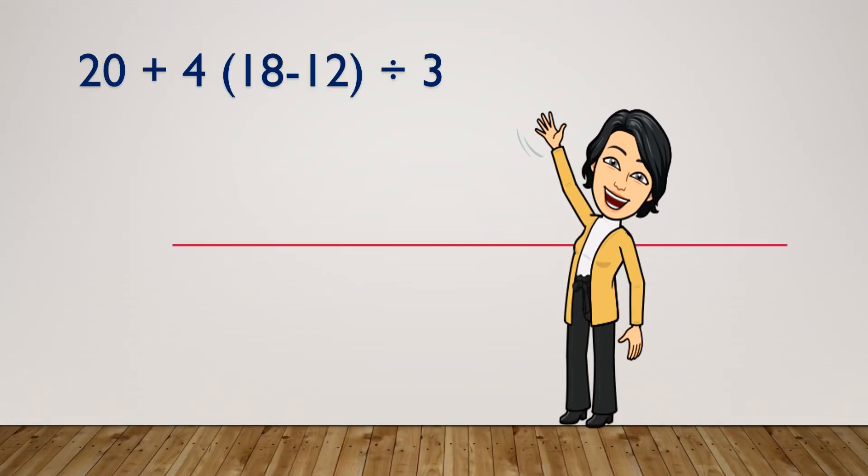Let us evaluate the answer of the two boys. In the equation 20 plus 4, open parenthesis 18 minus 12, close parenthesis, divided by 3. If we follow the order of operations, we do first the operation inside the parenthesis, and that is subtraction. So, 18 minus 12 equals 6.